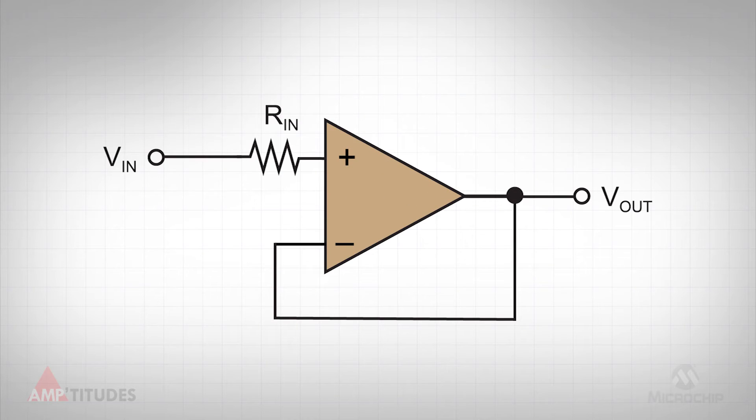Let's look at a simple voltage follower circuit, as shown here. For the purposes of this exercise, we will focus only on the noise associated with the amplifier and the thermal noise of the input resistance, noted here as Rn.